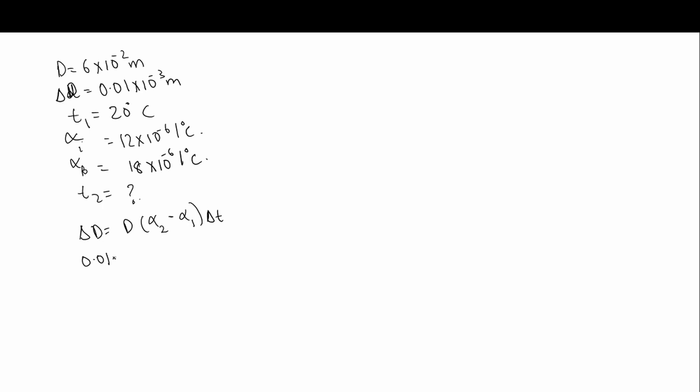So delta D is 0.01 into 10 to the power of minus 3. D is 6 into 10 to the power of minus 2. Alpha 1 and alpha 2, this is alpha 1, this is alpha 2. Alpha 2 minus, I have taken 10 to the power of minus 6 common. Delta T is T2 minus T1. T2 minus T1 is 20. So from this we can tell 0.01 into 10 to the power of minus 3 is equal to 6 into 10 to the power of minus 2, 18 minus 12 is 6 into 10 to the power of minus 6 into T2 minus 20.